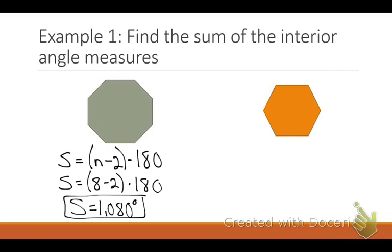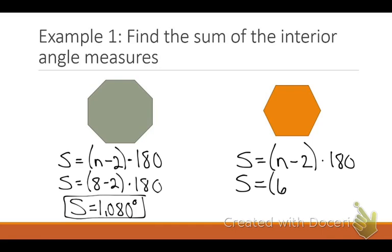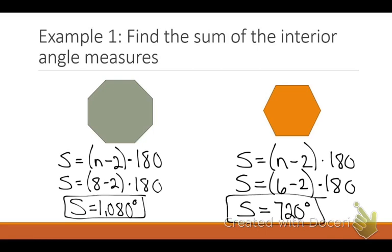Now try the next one on your own — count how many sides it has and plug it into the formula. Counting the sides: one, two, three, four, five, six sides. My original formula: S equals N minus two times 180. S equals six minus two times 180. Six minus two is four, and four times 180 is 720 degrees. That's something you could also memorize — 720 degrees for a hexagon.